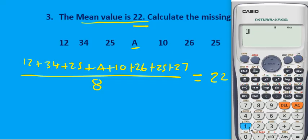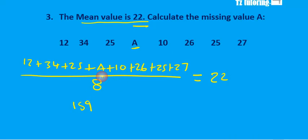12 plus 34 plus 25, we skip the A, so we go to 10 plus 26 plus 25 plus 27. So when you add the seven values that we've got, they give us 159. So we've got 159.